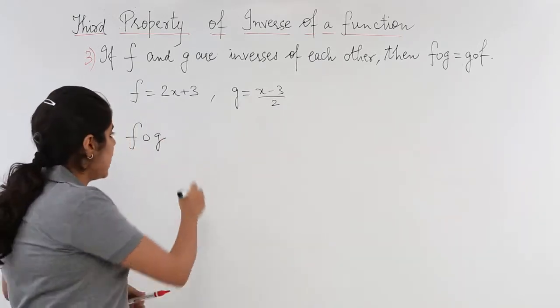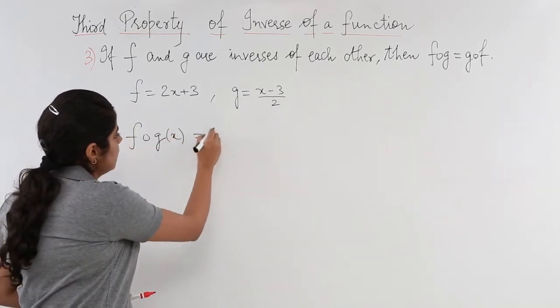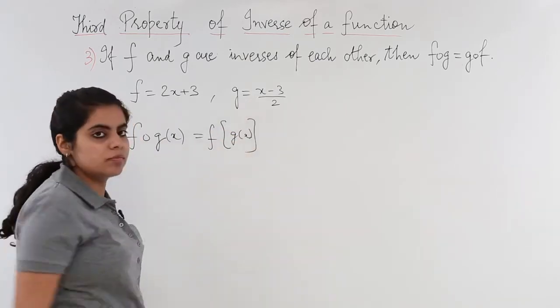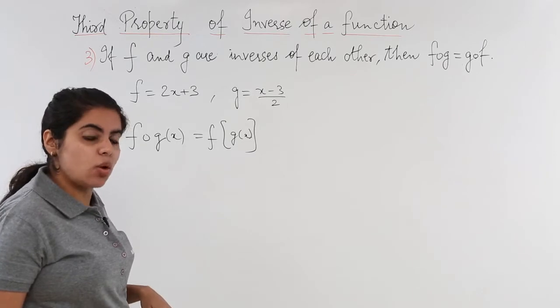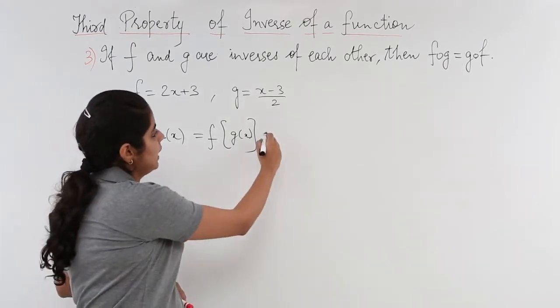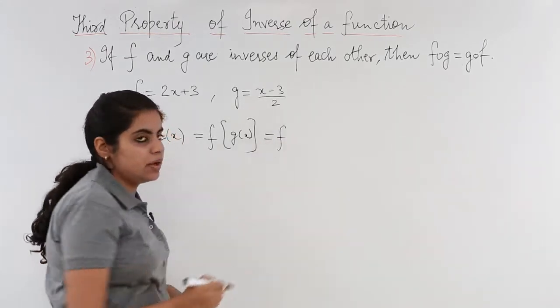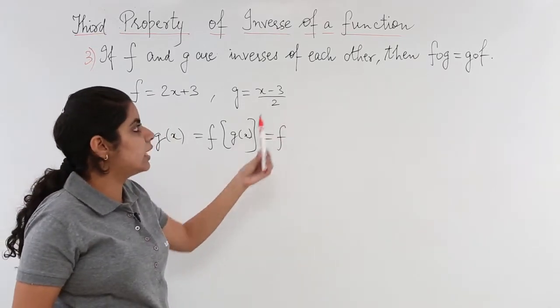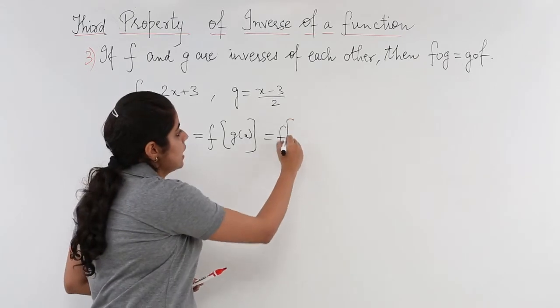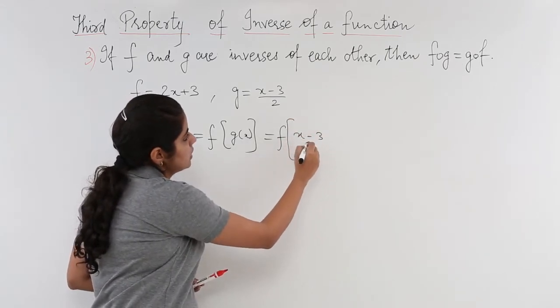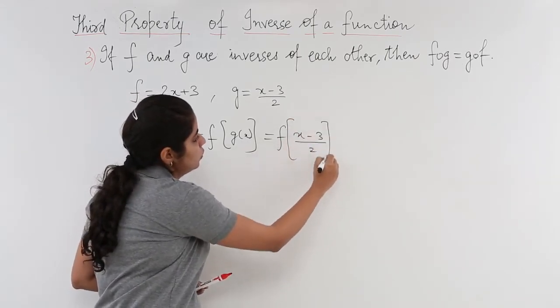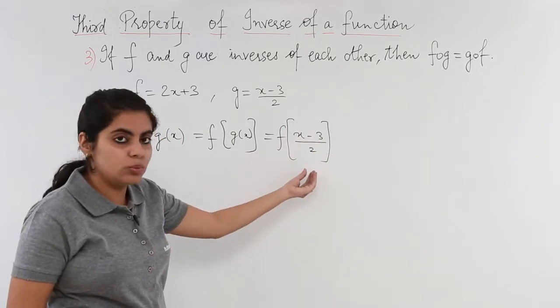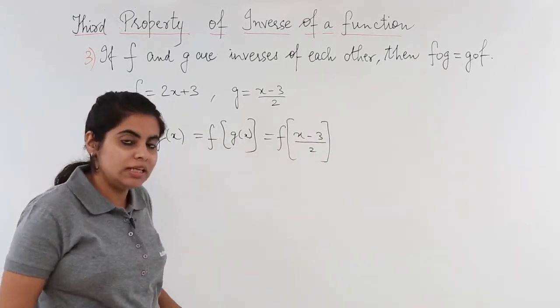What is fog? fog of x is nothing but f of gx. Now f of gx means what? It means that outside it will be f only and inside we have to substitute the value of g or gx, that is x minus 3 whole upon 2. And now this upon 2 and everything would come outside and we would solve it.